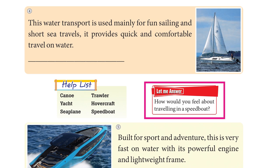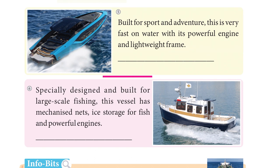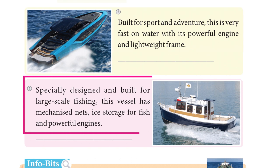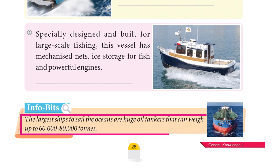How would you feel about travelling in a speedboat? A speedboat is built for sport and adventure — very fast with its powerful engine and lightweight frame. A trawler is specially designed for large-scale fishing, with mechanized nets, ice storage for fish, and powerful engines. Info Bits: The largest ships to sail the oceans are huge oil tankers that can weigh up to 60,000 to 80,000 tons.